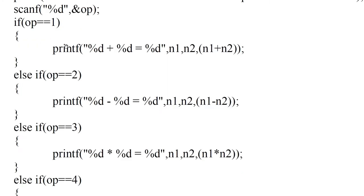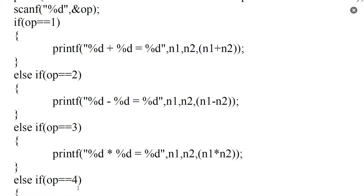Then, using the if-else ladder: if op equals 1, perform addition; else if op equals 2, perform subtraction; else if op equals 3, perform multiplication; else if op equals 4, perform division.